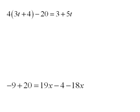Continuing on with solving equations, we have this equation, and you should be able to recognize the distribution right away. So we need to distribute that. 4 times 3t would be 12t, 4 times a positive 4 would be 16, minus 20 equals 3 plus 5t.